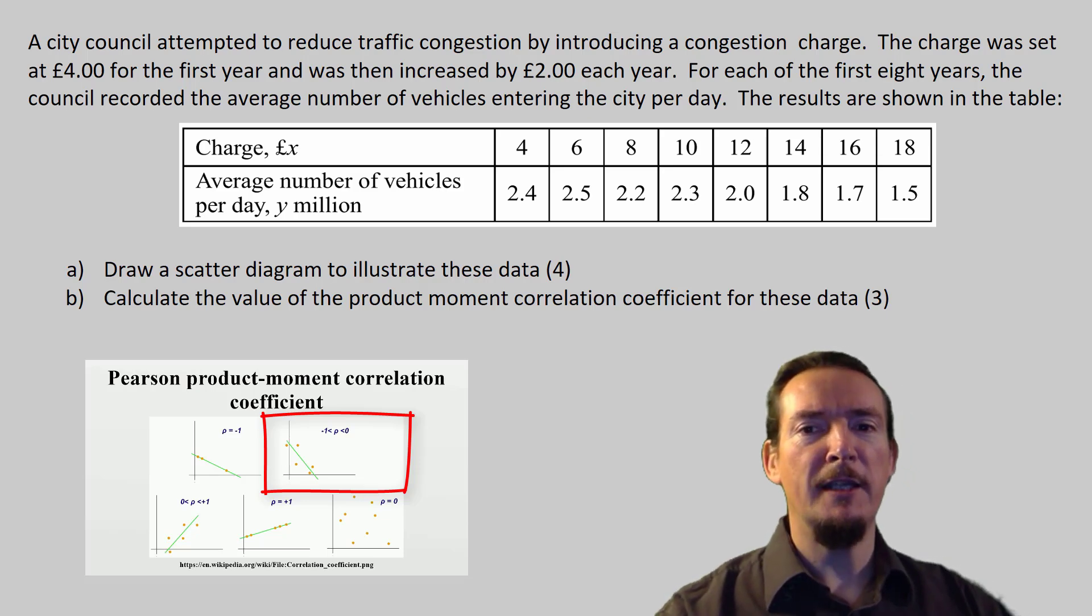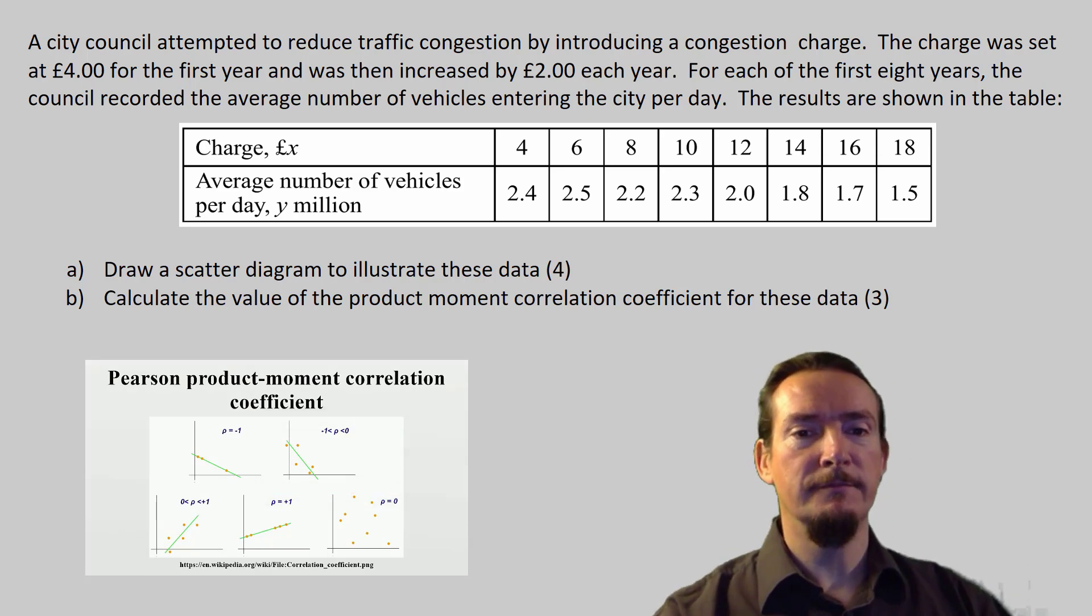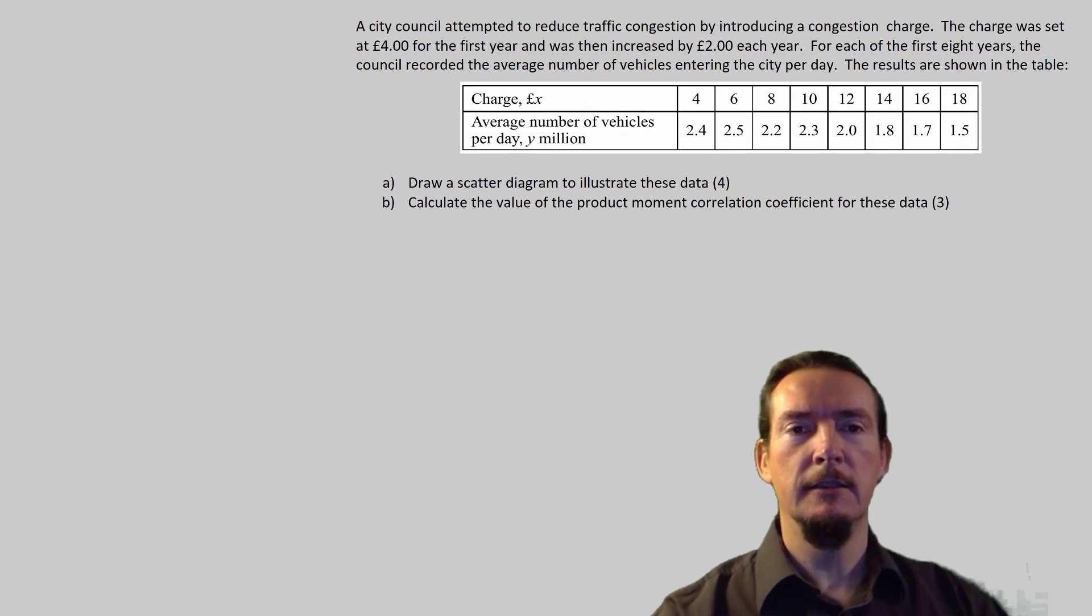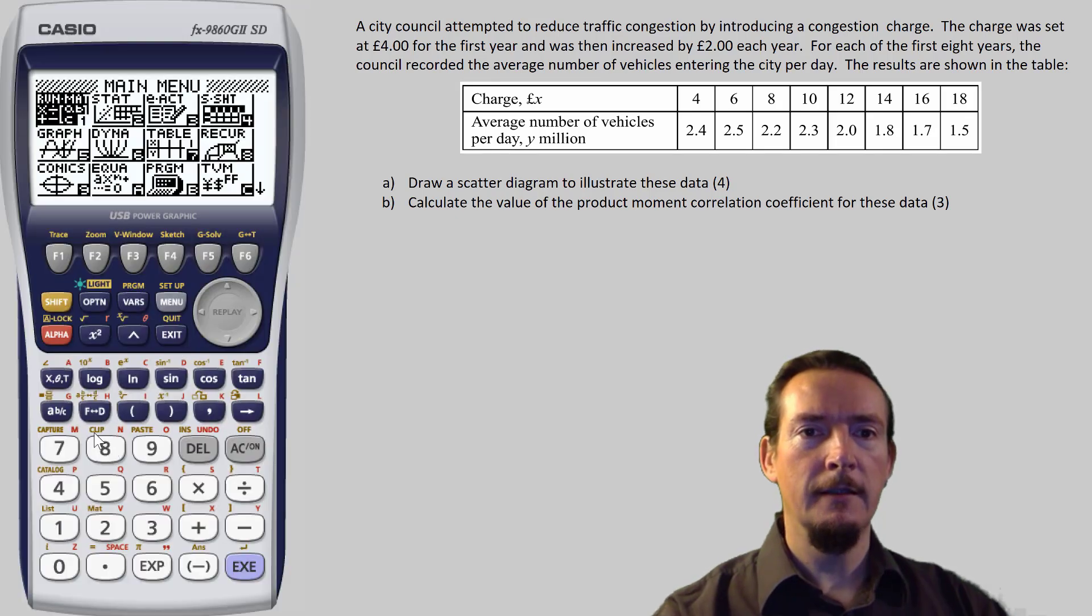It's much better to find out that you've made a mistake whilst you're still in the exam hall and you can do something about it, rather than when the results come in. OK, so let's start entering the data into the calculator and see what it tells us. So first up, put the calculator in stats mode, which is 2 on the main screen.